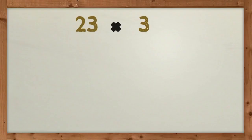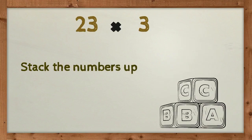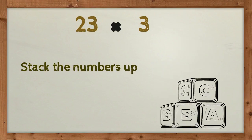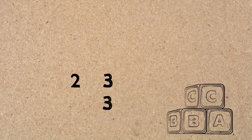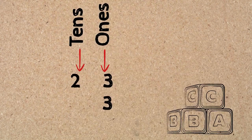Let's have a look at the first example: 23 times 3. The first thing we do is what we always do with addition and subtraction — we stack up the numbers. We stack them up so that the ones places are in one column and the tens places are in one column.